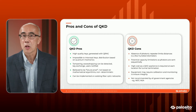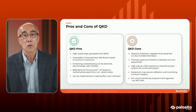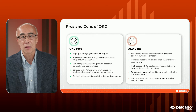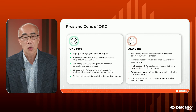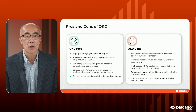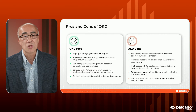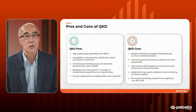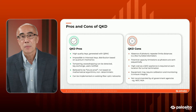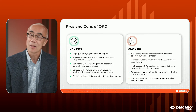QKD might provide strong security but may not be easy to implement. Phil, what are the pros and cons of QKD? The pros: it's high key quality, generated often with a QRNG for randomness. It's impossible to intercept these keys because they're distributed on a quantum channel based on quantum mechanics. Any tampering or eavesdropping can be easily detected, the key exchange can be terminated, and end users are notified. We truly believe this to be future-proof because it's not based on mathematical algorithms and it's non-deterministic. We can implement this on existing fiber optic networks, so you don't have to roll out new fiber.